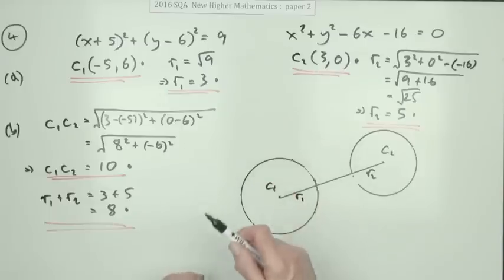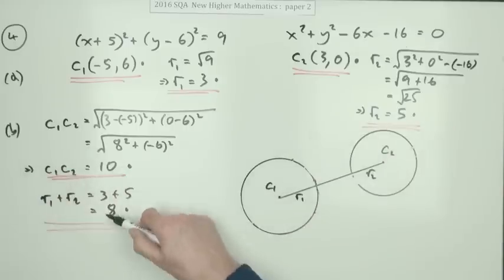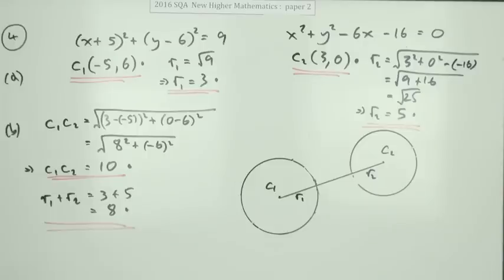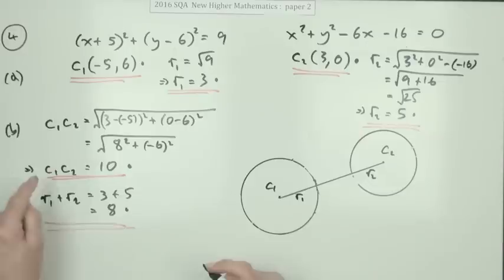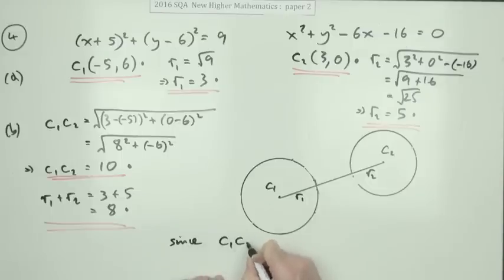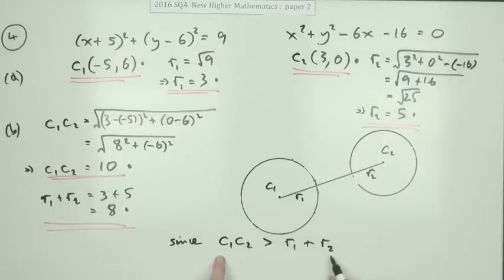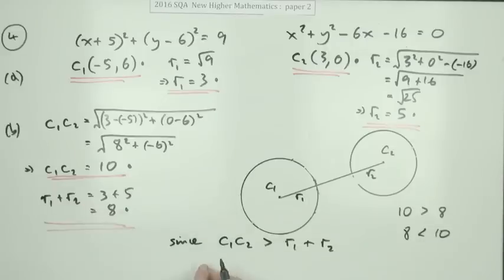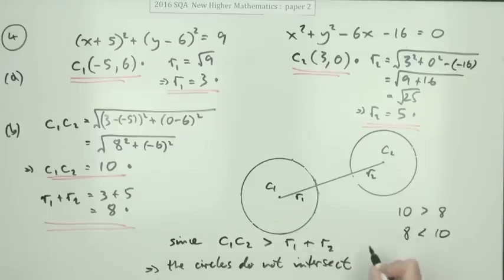The sum of the radii is three plus five, which is eight — that gets a mark. The final mark is for making a numerical comparison and a concluding statement. You can simply state that ten is greater than eight, or eight is less than ten, and then conclude that the circles do not intersect. More formally: since the distance between the centers (10) is greater than the sum of the radii (8), the circles do not intersect. Note that you must include the numerical comparison — you can't just state ten and eight and then assert the circles don't intersect without comparing them.